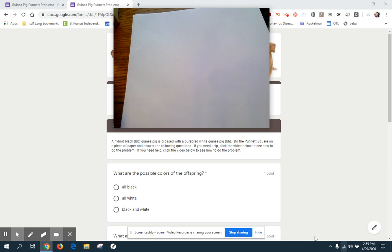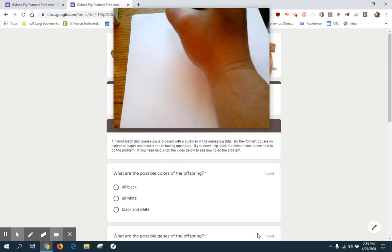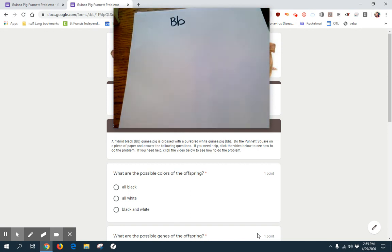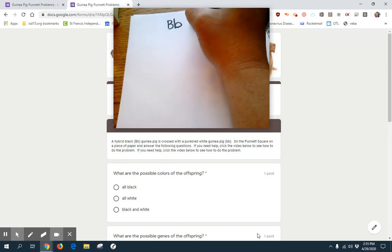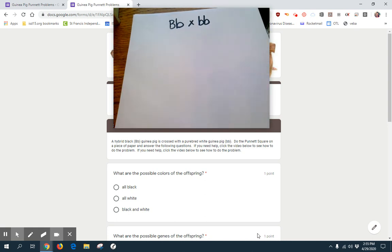All right, we are cruising right along into scenario three. In scenario three, we have a hybrid black guinea pig crossed with a purebred white. So one parent is a hybrid, one parent is purebred recessive. What will our results be in this Punnett square?